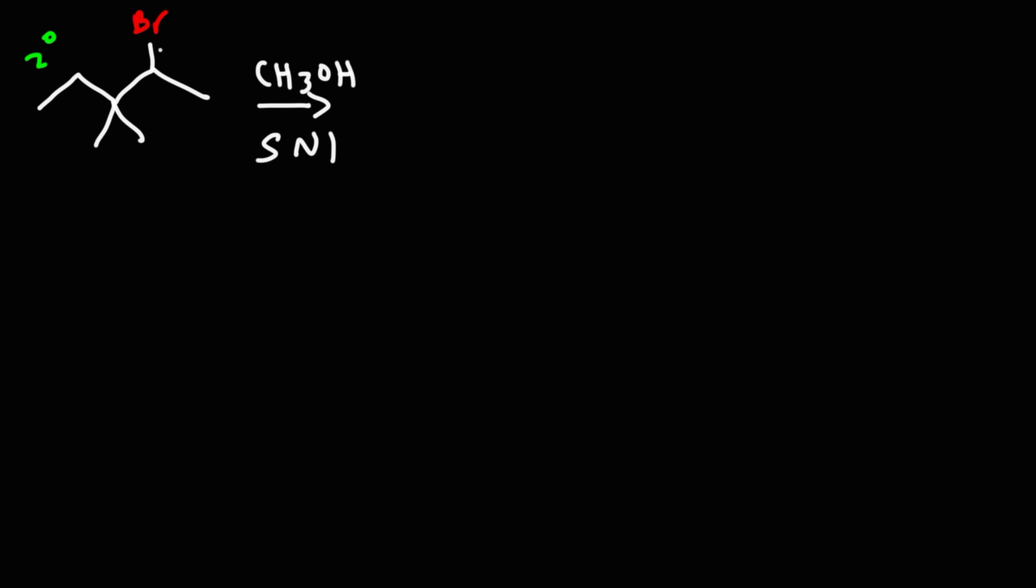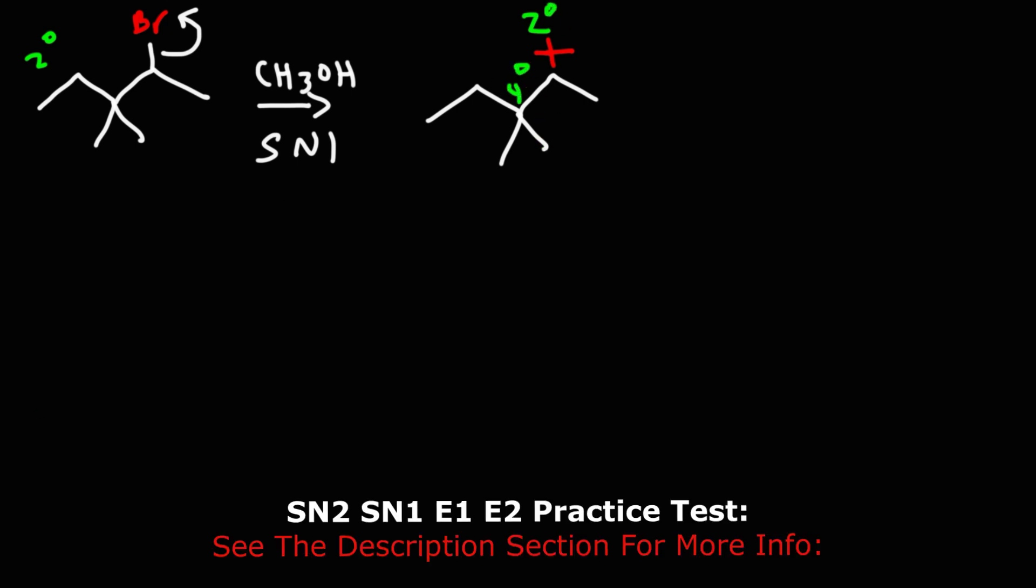Now, in this example, because we have an SN1 reaction, the leaving group is going to leave. And so we're going to get a secondary carbocation. Now, this secondary carbocation is adjacent to a quaternary carbon. So, in this example, we are going to get a methyl shift.